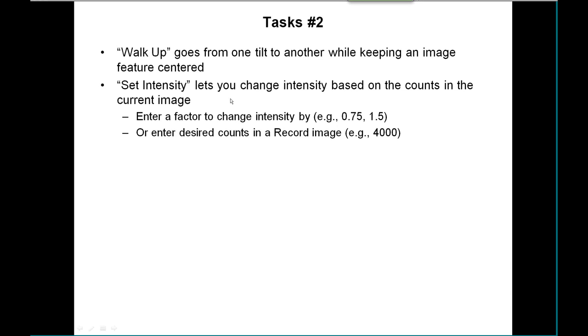It doesn't have to be a record image; it can be any kind of image because the program knows what the exposure time was. You can enter a factor to change the intensity by, as long as it's a small number under 10. The other thing you can do is just enter the desired number of counts you want to have in a record image, like 4,000.